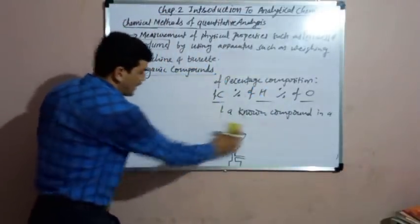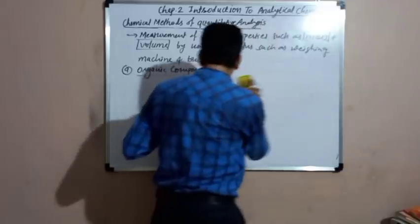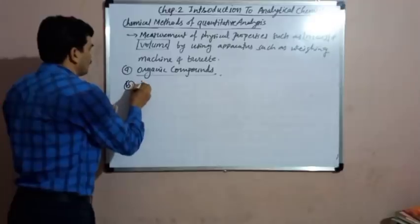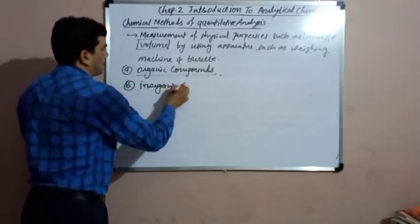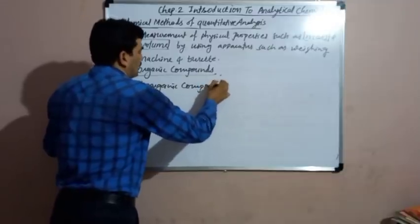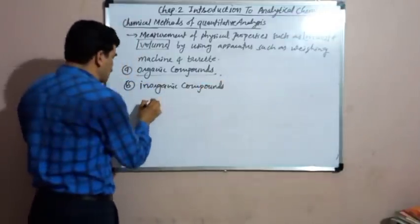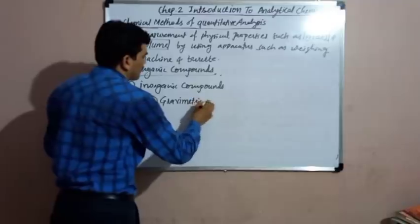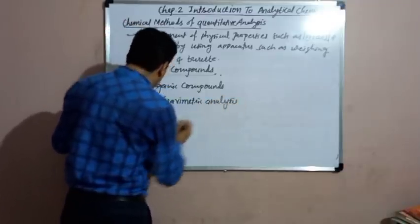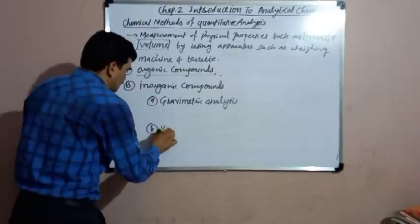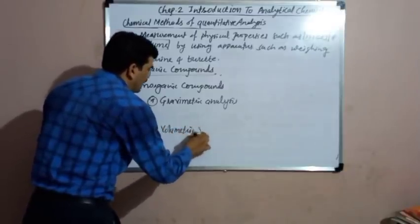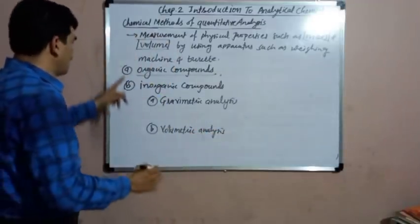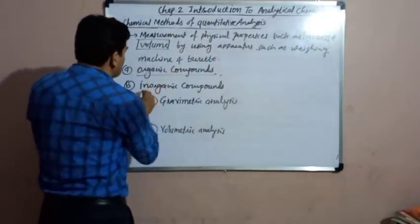For the quantitative analysis of inorganic compounds, two types of methods are used: one is gravimetric analysis and the other is volumetric analysis. These are the two methods used in the quantitative analysis of inorganic compounds.